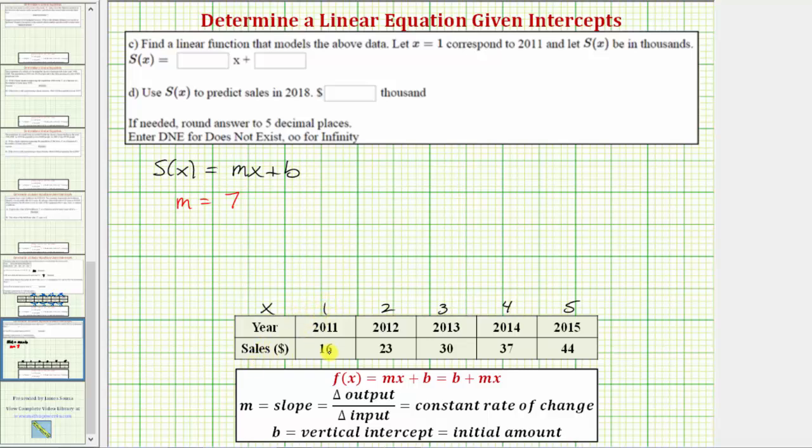And notice how the sales of $16,000 corresponds to x equals one, not x equals zero. So the initial amount is actually going to be the sales in the year 2010, because x equals zero corresponds to 2010.